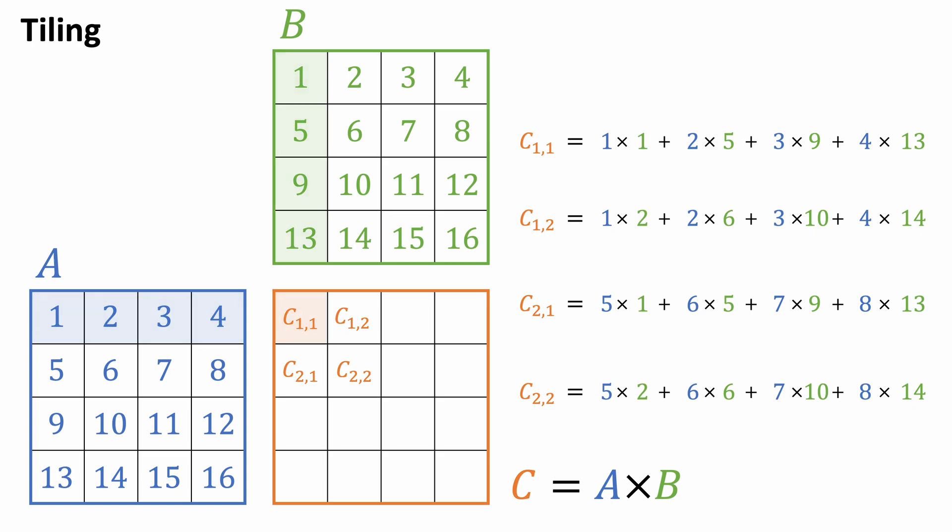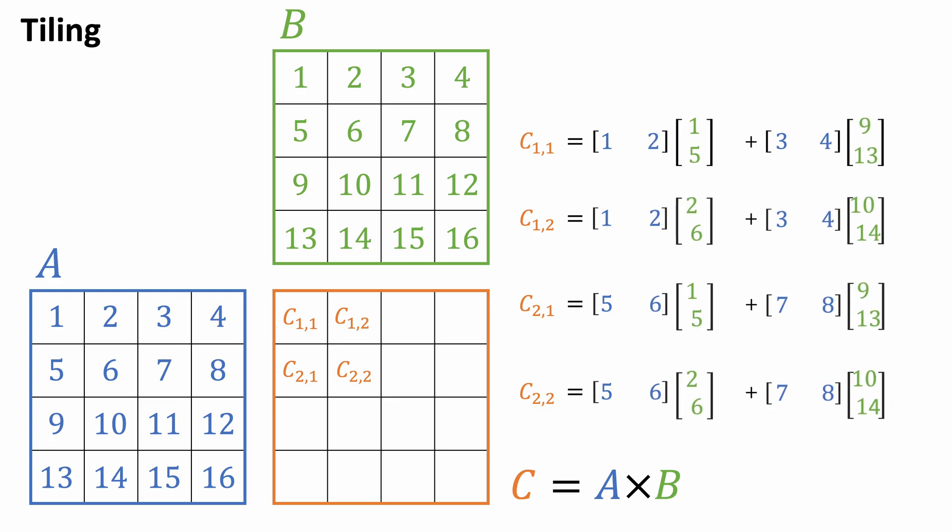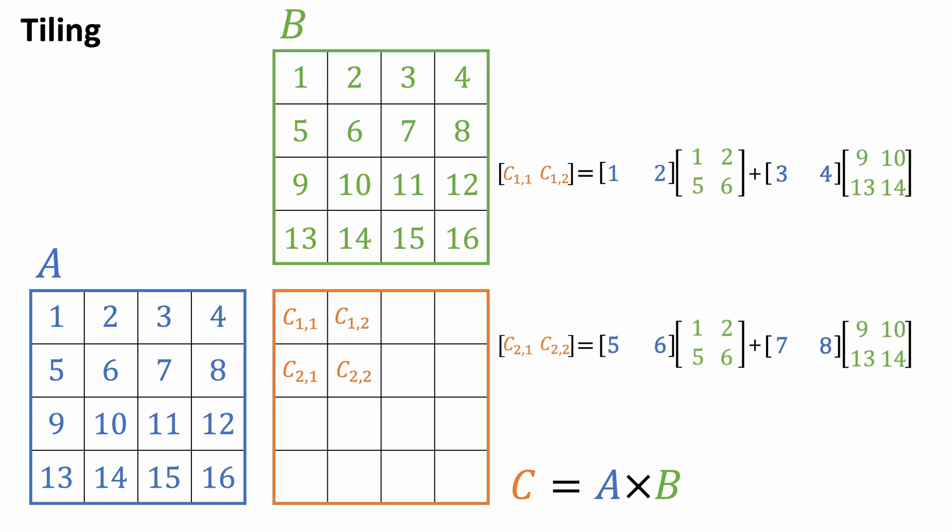Now let's check how many global memory accesses this requires. To compute each value, we need to load one row vector from matrix A and one column vector from matrix B, so eight accesses. In total, this results in 32 memory accesses. Can we do better? We see that C11 can be computed with two dot products. The same applies to other values.